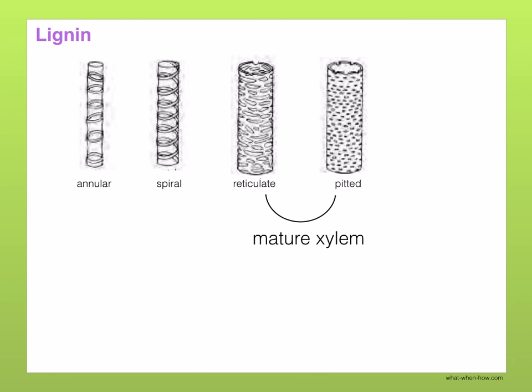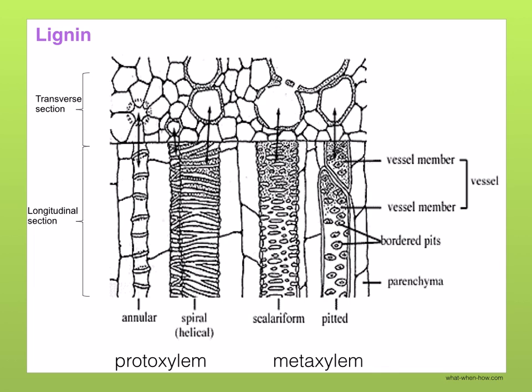Reticulate and pitted lignification is found in mature xylem. Xylem vessels have cellulose cell walls first, which then become lignified. Lignin is impermeable so will not allow substances in or out, and the cell contents die. At first the lignin is only laid down in rings or spirals so the cell can elongate. In mature xylem the walls have lots of lignin making them reticulate or pitted. Young xylem is called proto-xylem and has annular or spiral thickening, while mature xylem is called meta-xylem — it is much bigger and thicker with reticulate or pitted thickening.